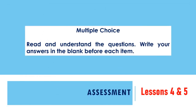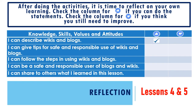For our assessment, you are going to answer a 5-item multiple choice test. Read and understand the questions and write your answer in the blank before each item. After doing the activities, it is time to reflect on your own learning. Check the column for thumbs up if you can do the statements, and thumbs down if you think you still need to improve. For example, 'I can describe wikis and blogs' — if you think you can already do the statement, check thumbs up; if you still need to improve, check thumbs down.